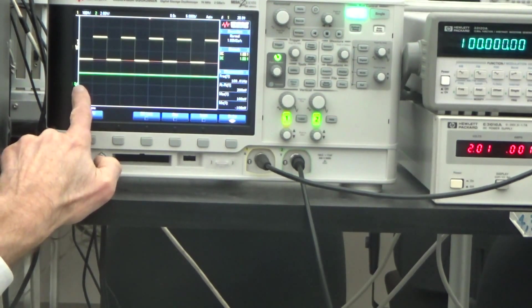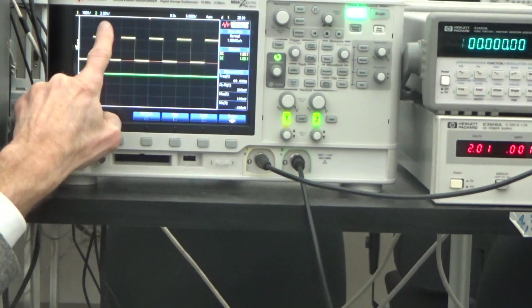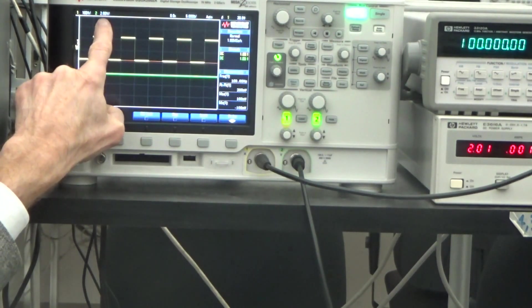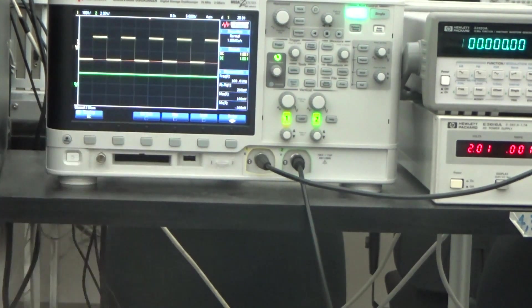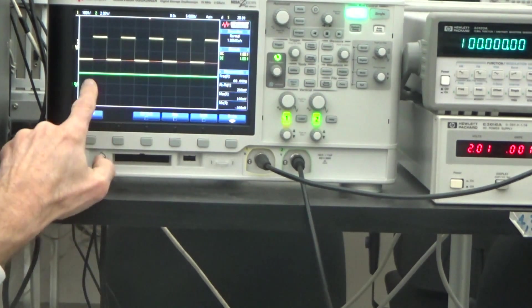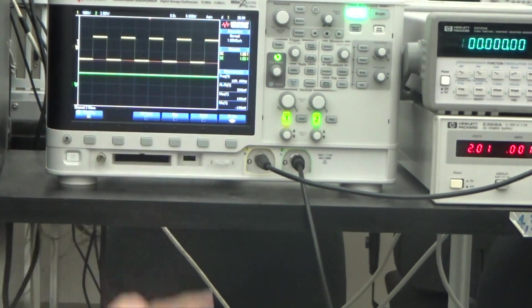The zero line is down here and the gain is set to 2 volts per division and it's up one division. You can see it's a flat line as a power supply should be, a constant voltage. So I'm going to talk first about the power supply.